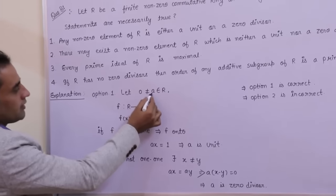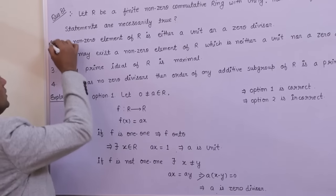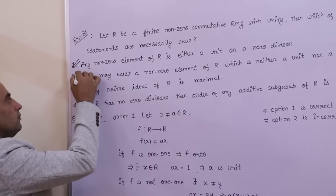That is, every non-zero element is either unit or a zero divisor. So first option is true. Now if first option is true, then second option must be incorrect.